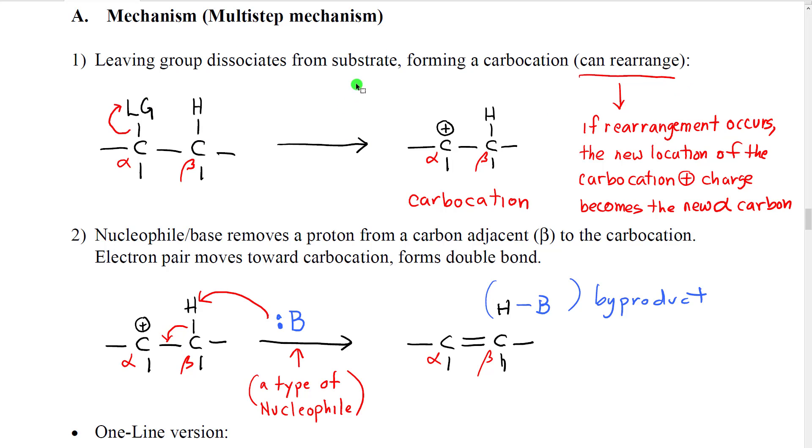In the E1 reaction, the first step is that the leaving group dissociates from the substrate. It comes off of the substrate. That creates a carbocation at alpha. Now the significance of this is that this carbocation can and will rearrange if it becomes more stable.